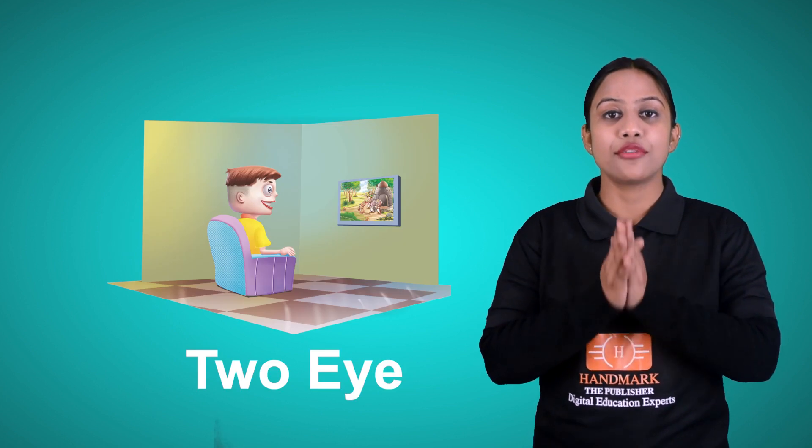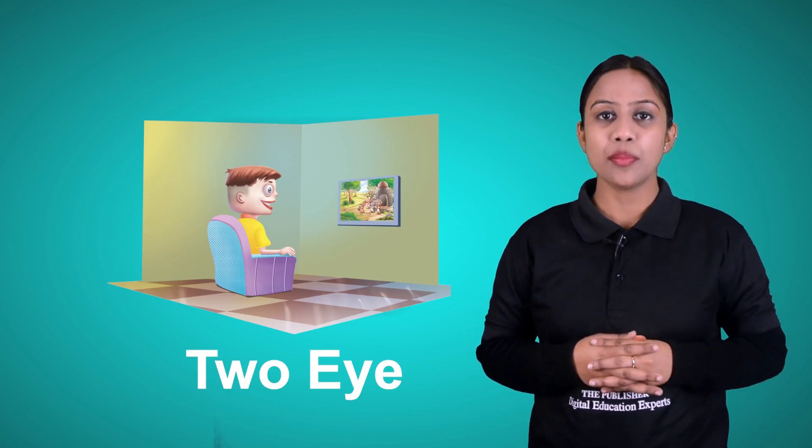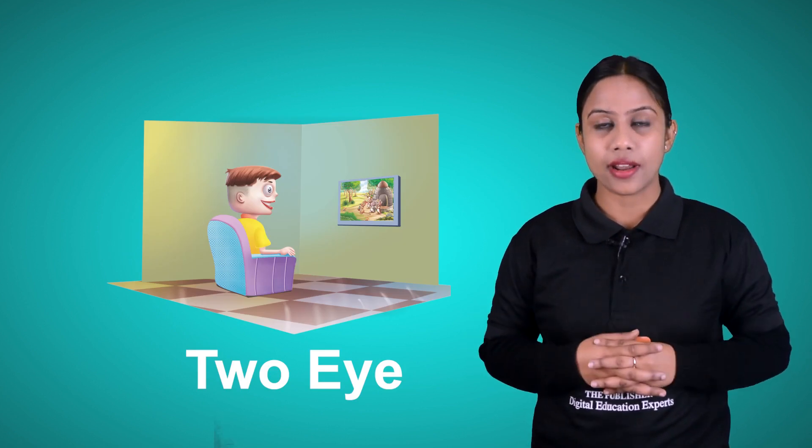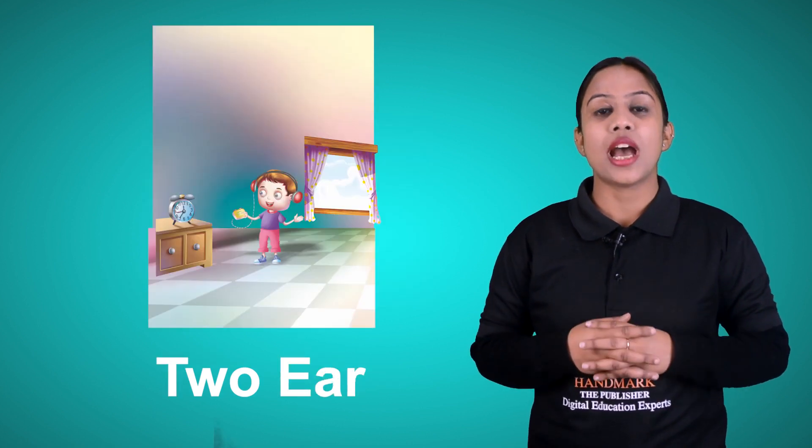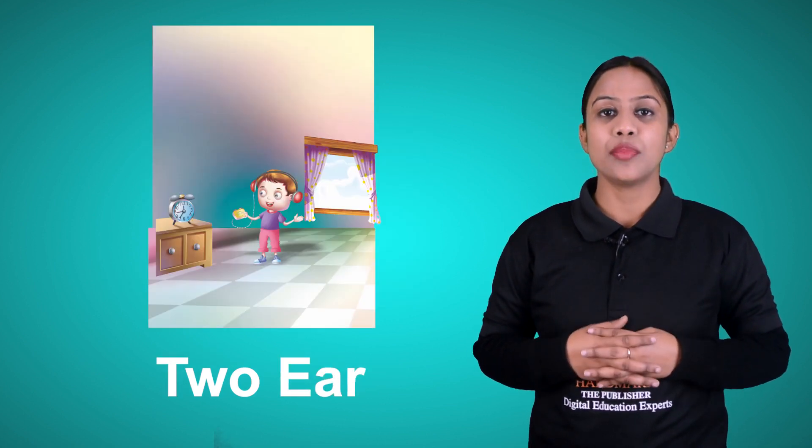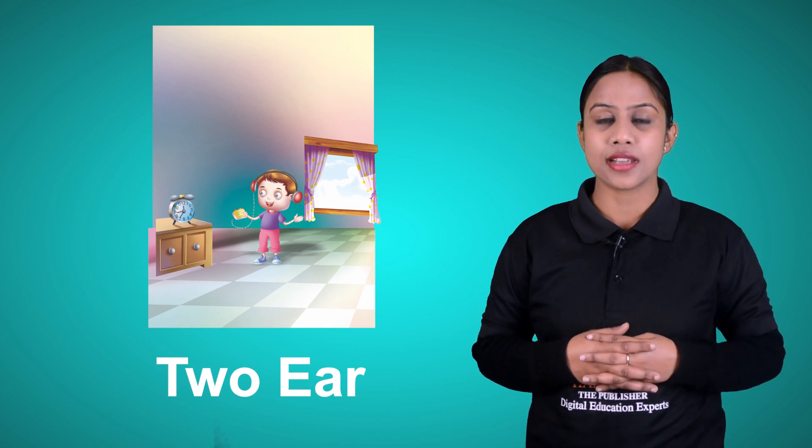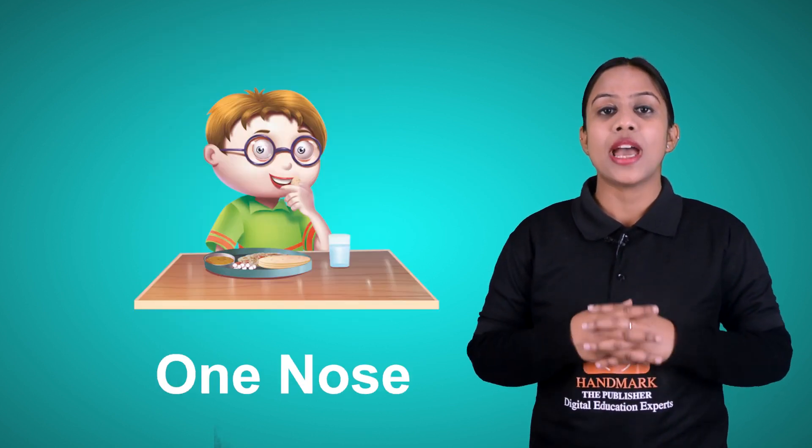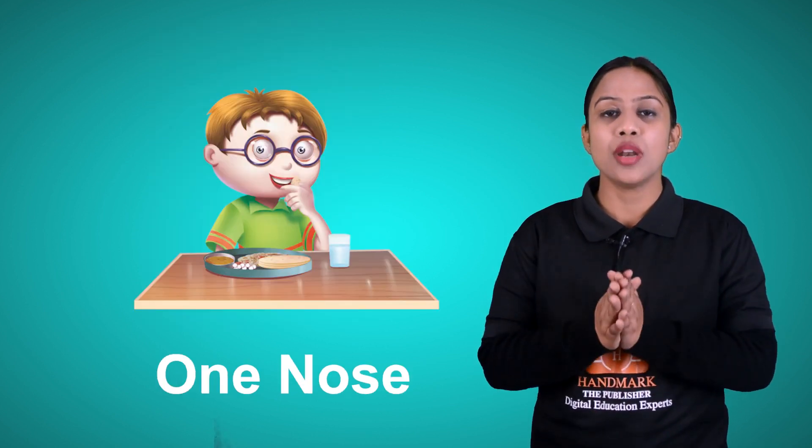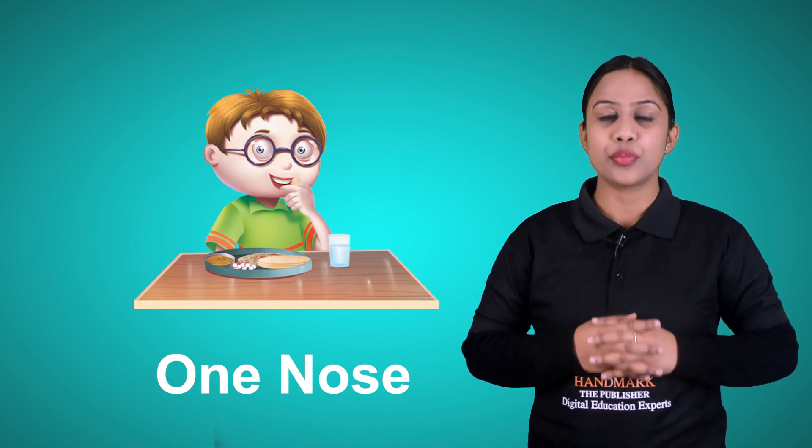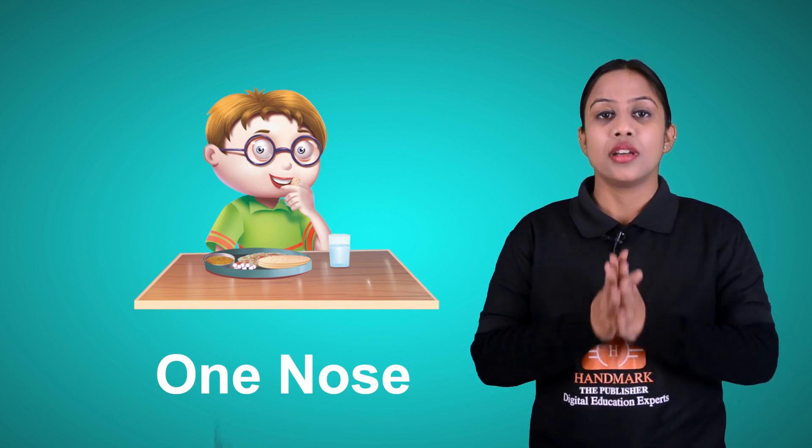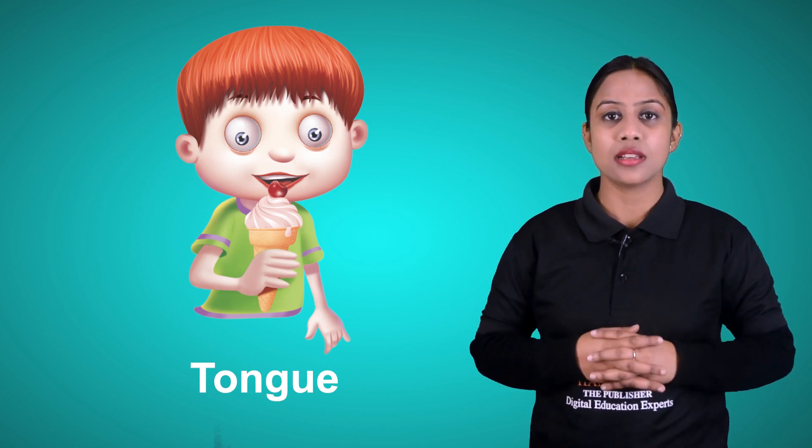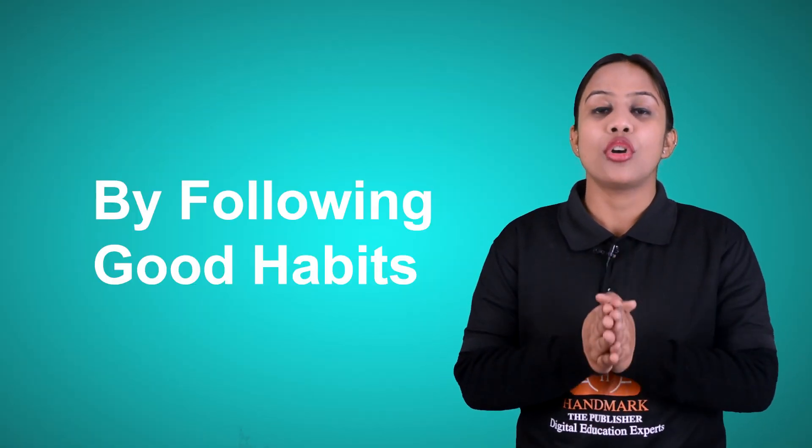We have two eyes which help us to see the things around us. We have two ears which help us to hear different sounds. We have one nose which helps us to smell and to breathe. We have one tongue which helps us to taste different kinds of food.